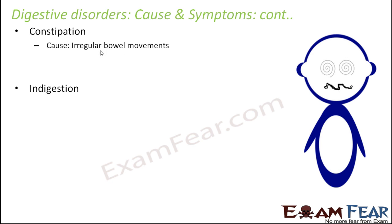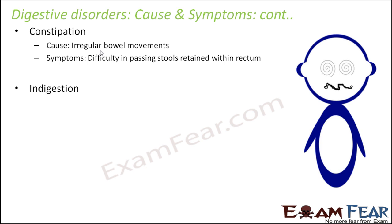Constipation is caused by irregular bowel movements. The muscle layers of the intestine contract to move food along, but when those movements are irregular — sometimes very fast, sometimes very slow — the food does not pass timely from one organ to the other. This leads to difficulty in passing stools, which are retained within the rectum. The stool becomes excessively solidified, making it very painful and difficult to eliminate through the anal opening.